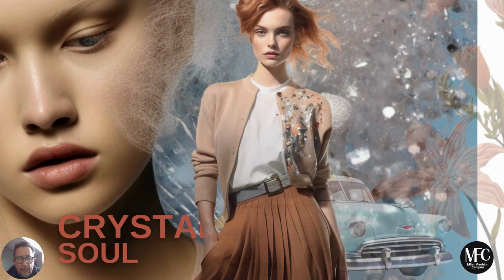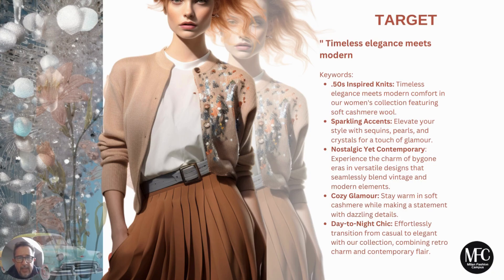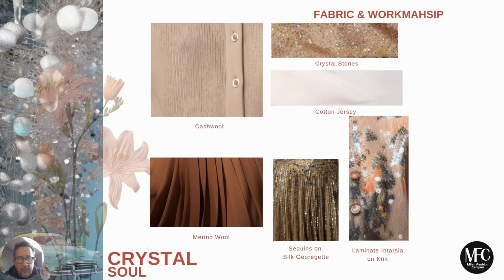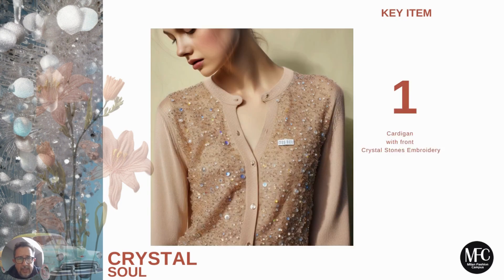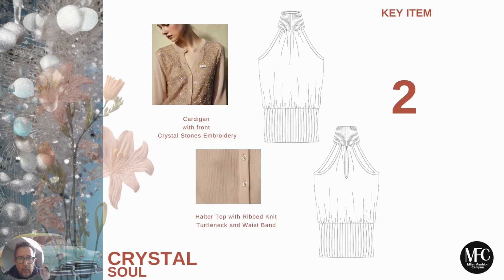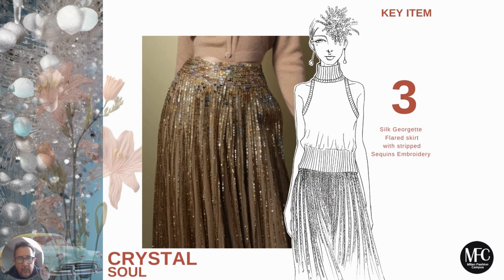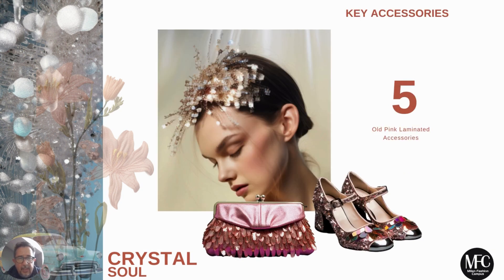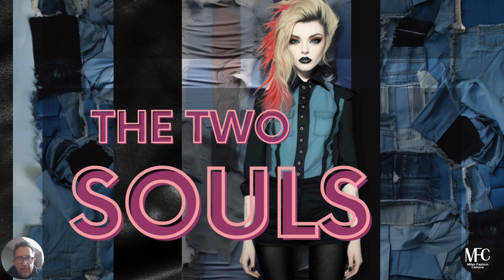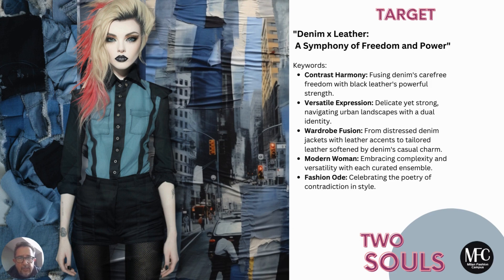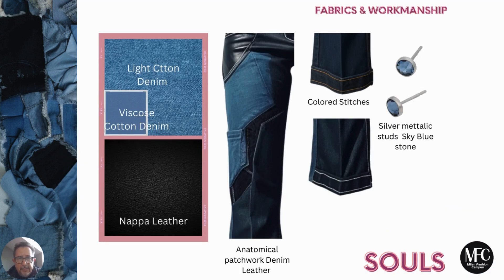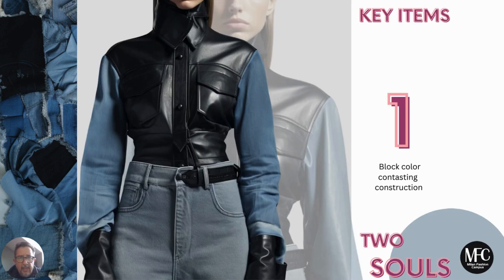Again, here the mood board and the target woman. Here we will see the materials that we will use for this theme. We can zoom in on the items — for example, a cardigan with front crystal stones. Of course, we can also draw our items to understand how they look. Here again are the accessories, totally changing. We now work with denim — two soles, meaning leather and denim. Again, here the target woman, the details, and the materials for this theme. Here again we have the key items, and we can really understand how these could look when we create them.